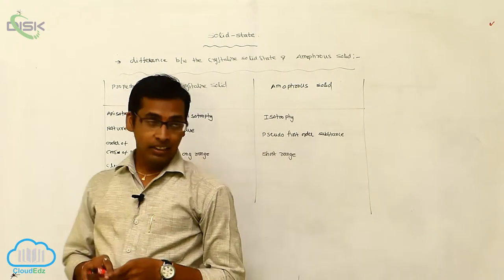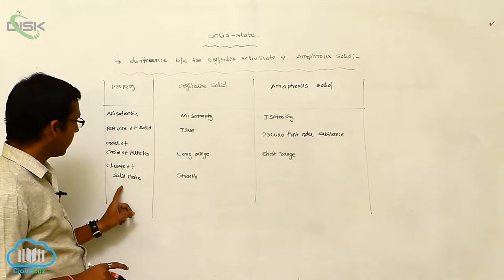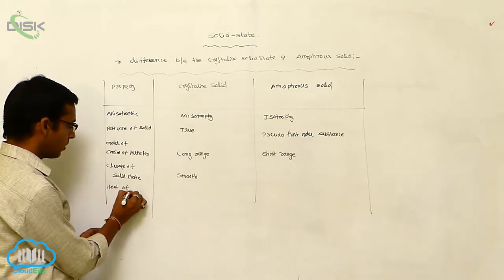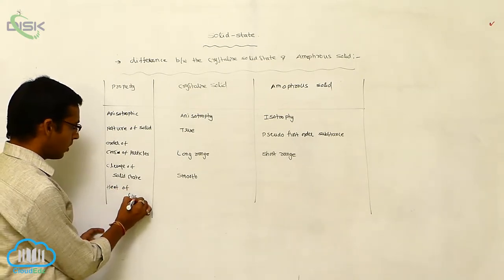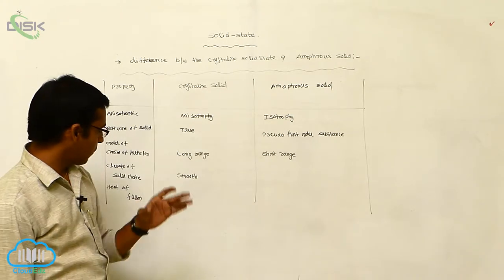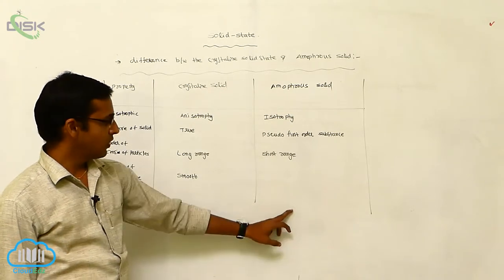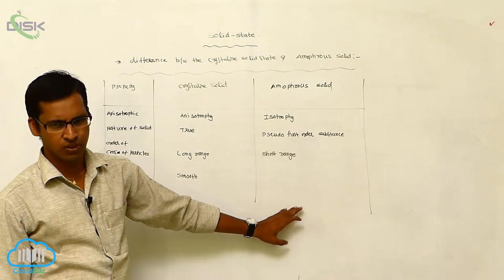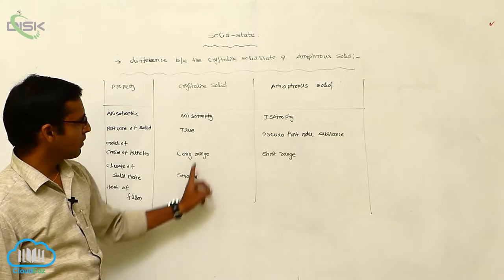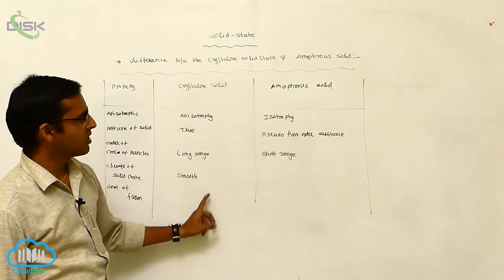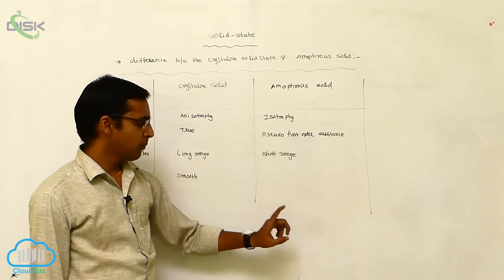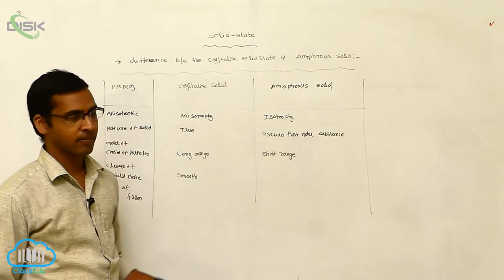The next property is heat of fusion. Crystalline solids show high heat of fusion, while amorphous solids have very little or no heat of fusion. For melting point and boiling point, crystalline solids have higher values, while amorphous solids show lower melting and boiling point characters.